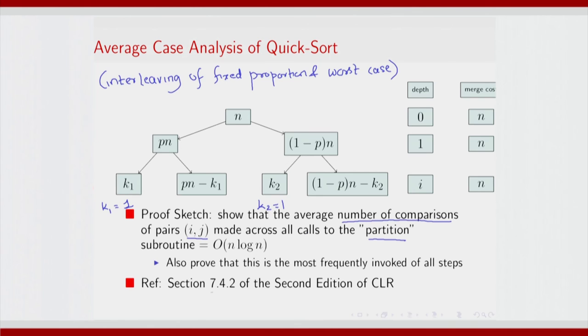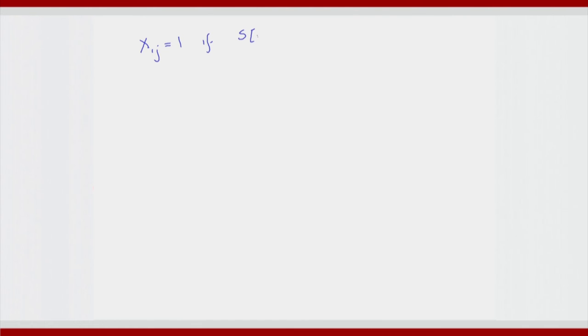This comparison is the most frequently invoked of all steps. While you can refer to section 7.4.2 of the second edition of CLR, I am going to give this intuitive proof sketch. Let us define a random variable x — x_{ij} is 1 if s[i] got compared with s[j].